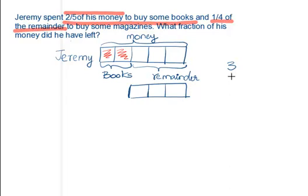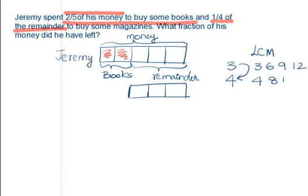We are going to use the LCM of 3 and 4, because we need to convert 3 units into 4 equal parts. Multiples of 3: 3, 6, 9, 12, 15... Multiples of 4: 4, 8, 12. The lowest common multiple is 12. So we divide each of the 3 units into 4 sub-units, giving us 12 total sub-units.